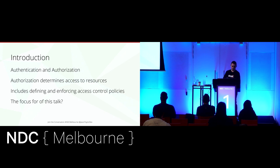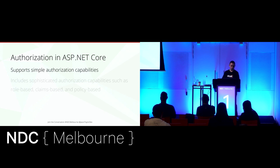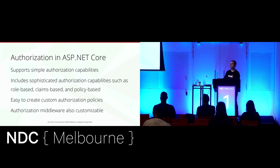ASP.NET Core supports very simple authorization capabilities, such as authorizing an authenticated user or allowing anonymous access. But it also includes sophisticated authorization capabilities, such as role-based, claims-based, policy-based, resource-based, and view-based authorization. In addition, it's easy to create custom authorization policies, and it's also easy to customize the authorization behavior using middleware.